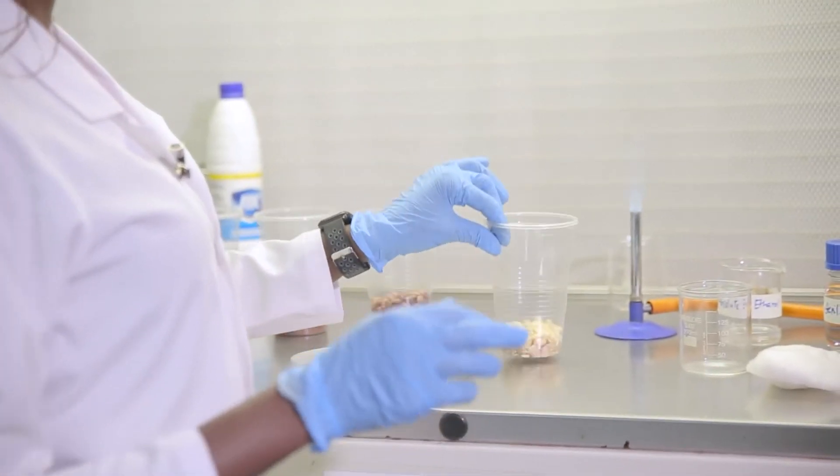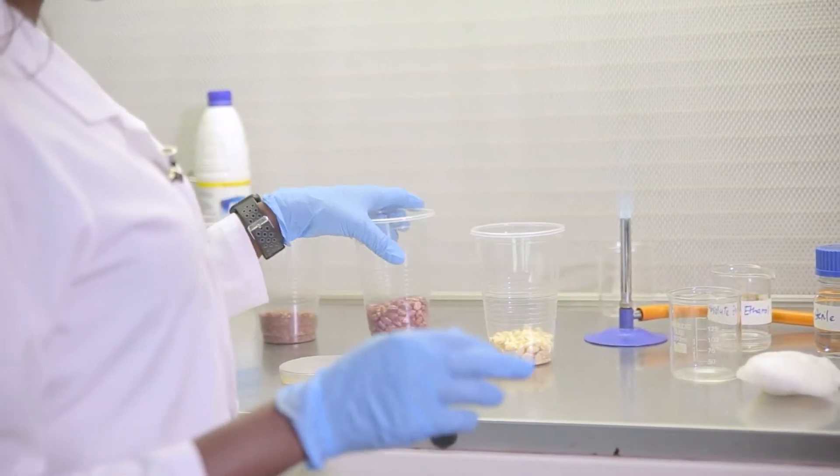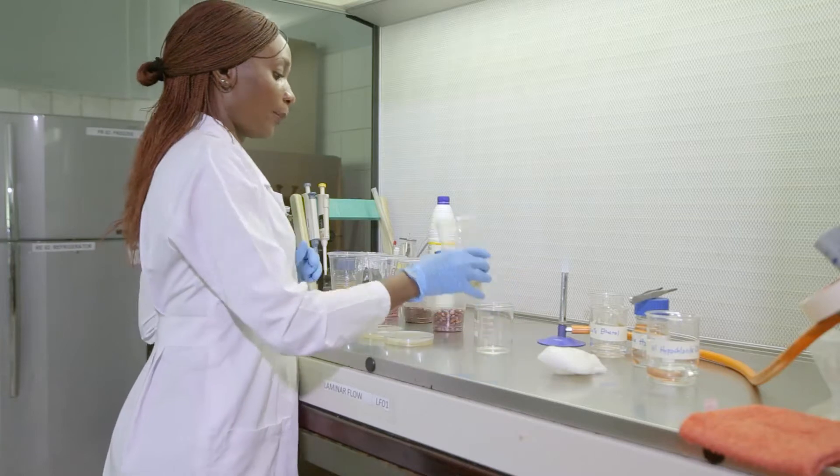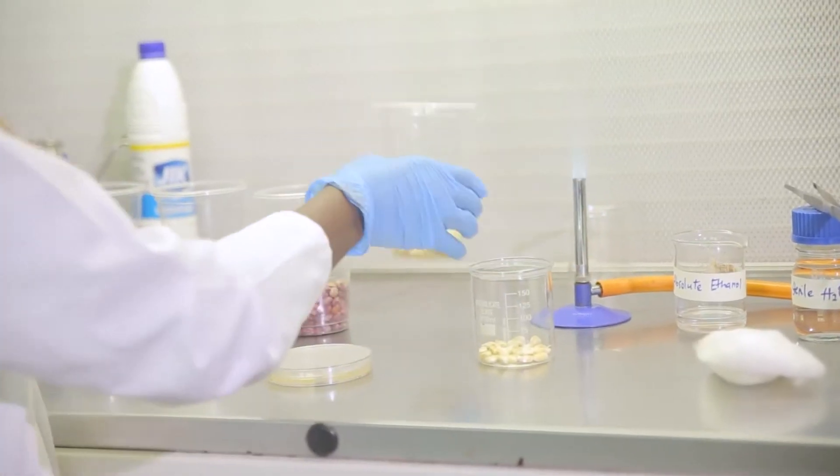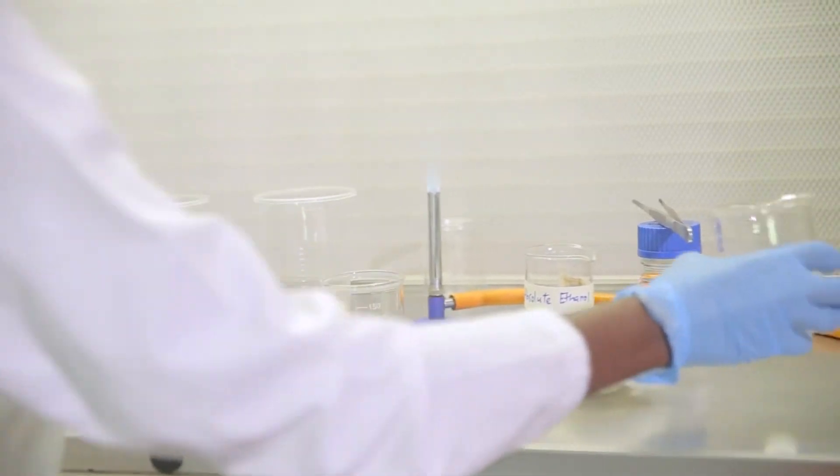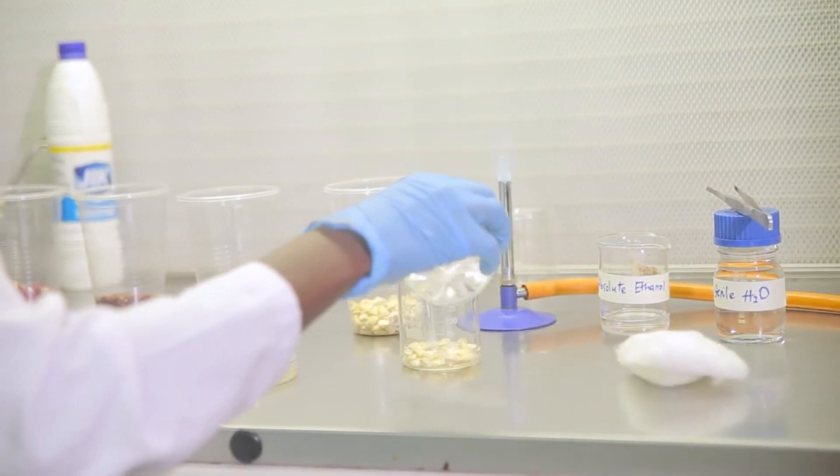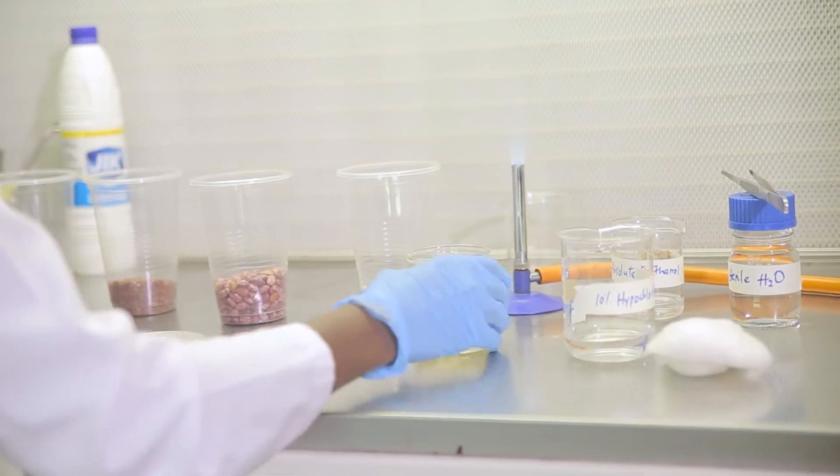So I'll demonstrate with the corn and maybe I'll also use the beans. We pour a few seeds into the beaker. They could be 10 to 20 seeds, and I'm going to cover them with the 10% hypochlorite.